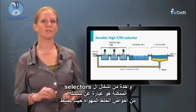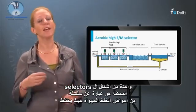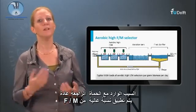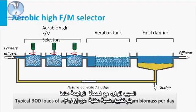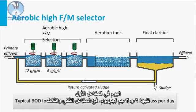One of the selectors possible is a series of aerated mixed tanks in which the influent is mixed with the return sludge. Typically, a high food-to-mass ratio is applied. BOD loads of these aerobic selectors are recommended by Jenkins as 12 grams BOD per gram of biomass per day in the first reactor, followed by 6 and 3 grams per gram per day in the second and third reactor.